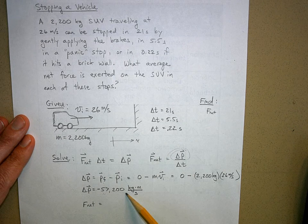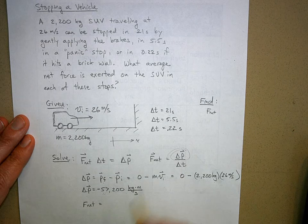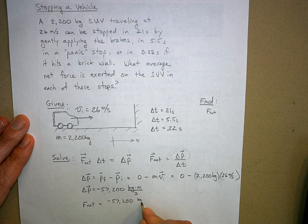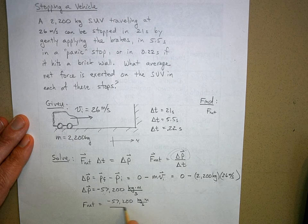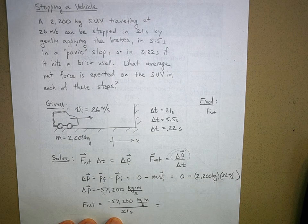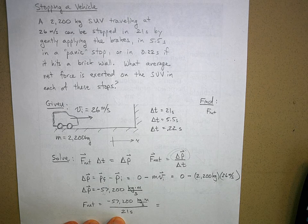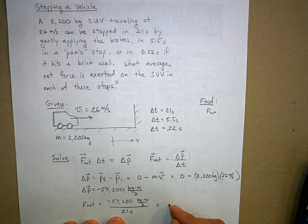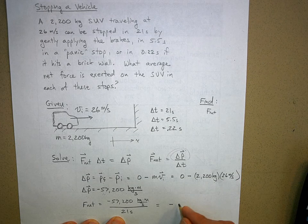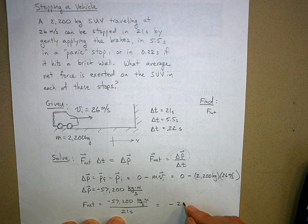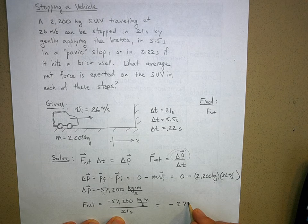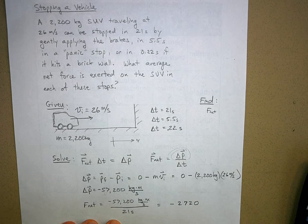Now I can figure out the net force by taking this change in momentum and dividing it by the time. Let's figure out the first one: divided by 21 seconds, and you get negative 2,724. I'm just going to round it off to three significant figures. Now let's take a look at the units here.